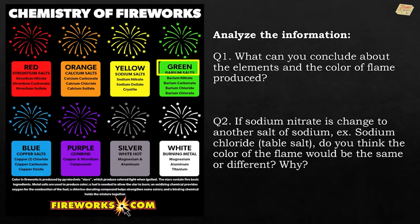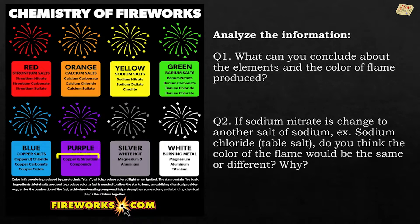Green can be seen if barium salt is present; blue will appear if copper salt is present; purple will appear if it is a combination of copper and strontium compounds; and silver can be seen when magnesium and aluminum are combined.